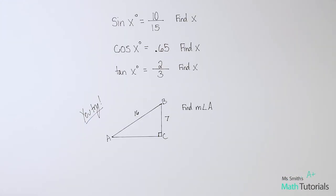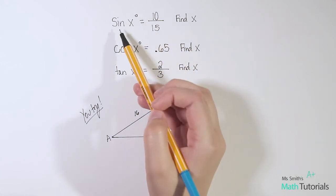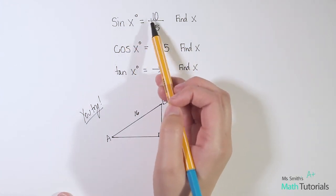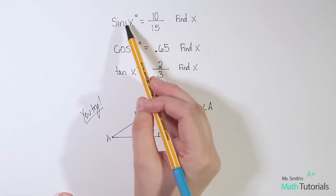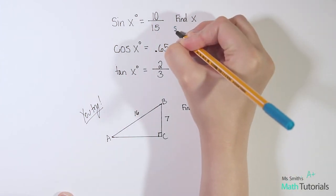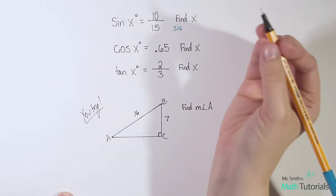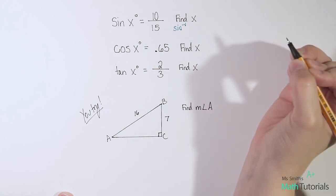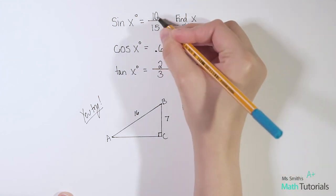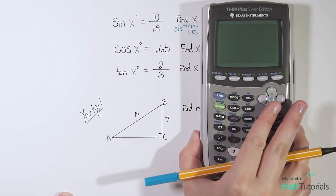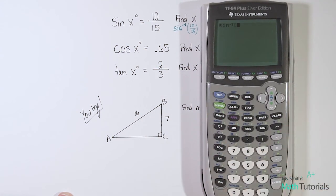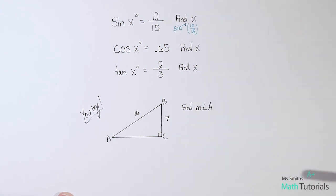Sometimes they'll present it differently: for example, sine of x equals 10 over 15, and they'll say find x. Remember, if the angle x is missing, all we need to do is say sine to the negative one, and in parentheses put 10 over 15. Make sure you're in degree mode, then hit second sine, enter 10 divided by 15, close the parentheses, and we get 41.81 as our answer.